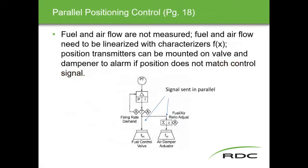Parallel positioning control: the only real change from single point is the word 'parallel.' Instead of one signal going to an actuator running a jack shaft, we now have a parallel signal — one to the fuel valve and one to the air valve. Fuel and airflow are still not measured and still need to be linearized with characterizers. Position transmitters can be mounted on the valve and damper to alarm if position doesn't match the control signal — a primitive feedback form.